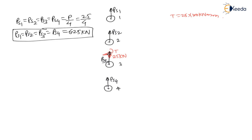Now let us find secondary shear loads. Secondary shear loads are required to cancel the clockwise torque. The torque is acting in the clockwise direction at G. To cancel this clockwise torque, we need to apply an anti-clockwise torque on all 4 rivets via secondary shear loads perpendicular to the radius at each rivet. Torque is nothing but force times perpendicular radius.